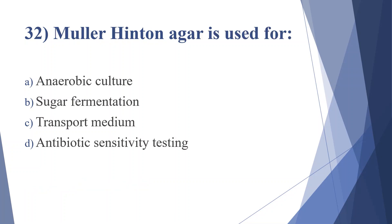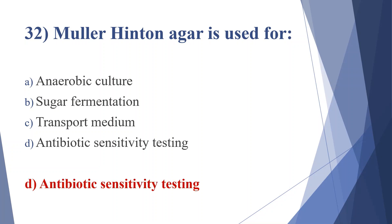Thirty-second question: Mueller Hinton agar is used for — option A: anaerobic culture, option B: sugar fermentation, option C: transport medium, option D: antibiotic sensitivity testing. Answer is option D, antibiotic sensitivity testing.